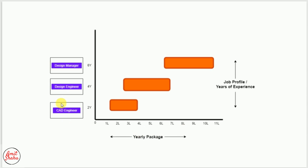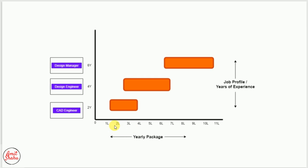For freshers with 0 to 2 years experience, you will get 2 lakh to 4 lakh yearly — not monthly, yearly. If you calculate monthly, it's around 16,000 something. Some companies like John Deere give 5 lakh or more as a fresher if you are from IIT. For general consideration, freshers can expect 2 lakh to 4 lakh.